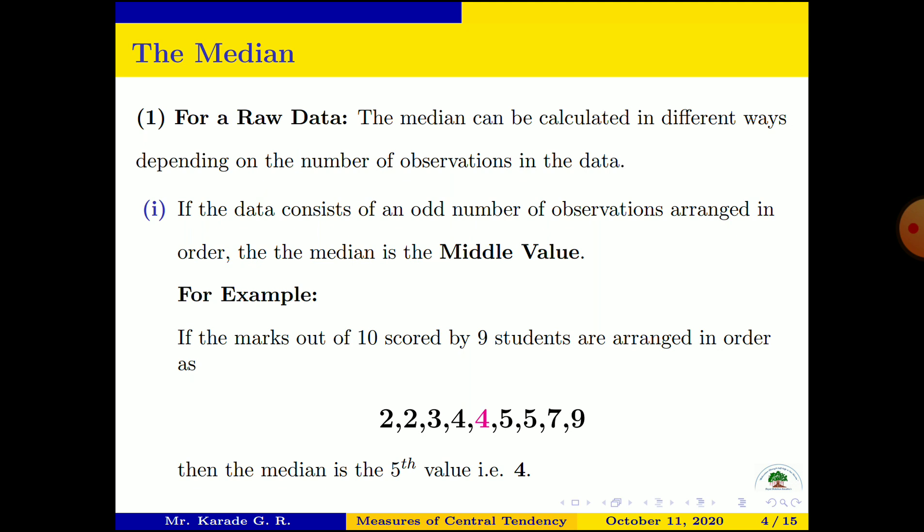The exact middle value of that data is 4, denoted by the magenta or pink color. So number 4 is the exact middle value — there are 4 values on the left and 4 values on the right. We arrange the data in increasing order; that is very important when finding the median. Here the exact middle value is 4, and therefore the median is the 5th value, which is 4.